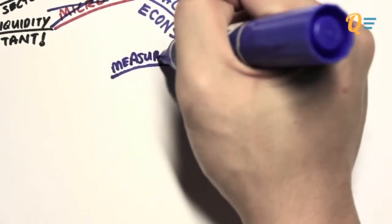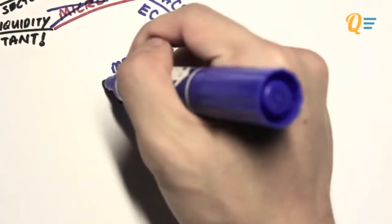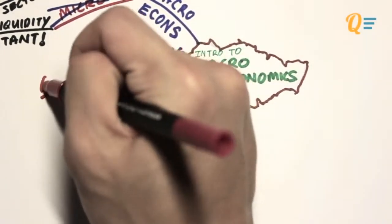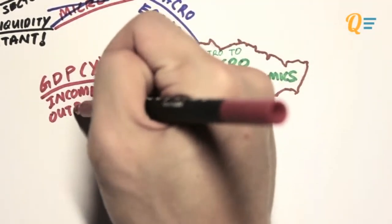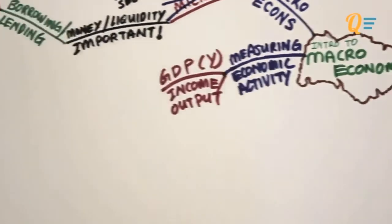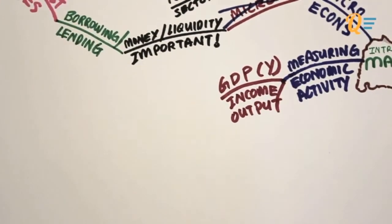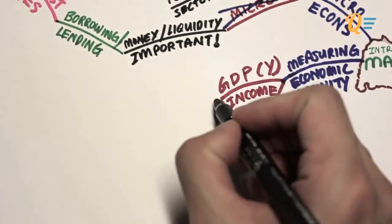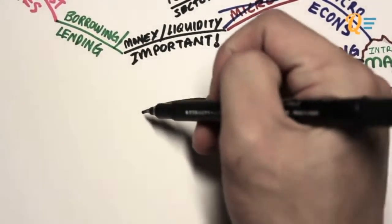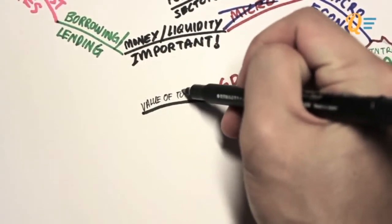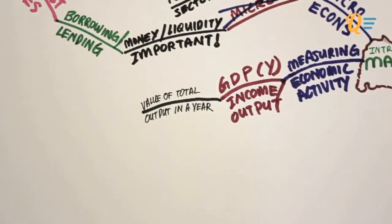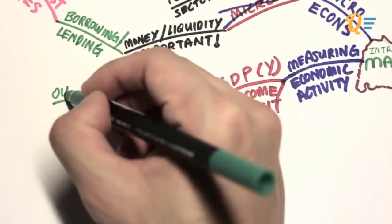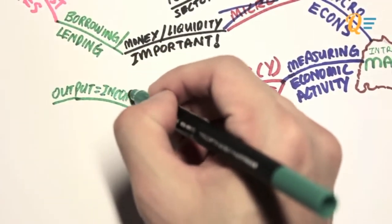How do we measure economic activity? What are the indicators we should look out for to determine whether the government's performance is up to par? What we usually measure is GDP, which stands for Gross Domestic Product. It is also known as Income Output, and the short form for it is a capital Y. The GDP is the value of the total output of the economy in a particular year. Output equals to income.